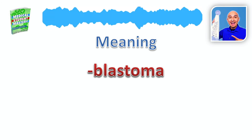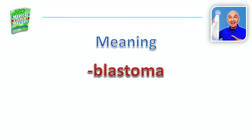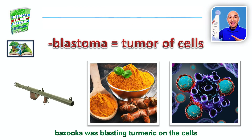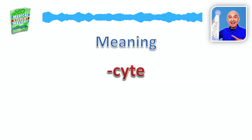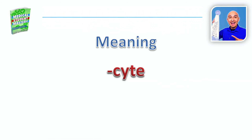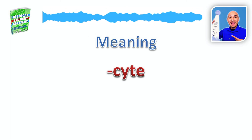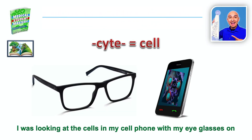Blastoma — what does -blastoma mean? That's right, you had a huge bazooka, and remember what you were blasting? You were blasting turmeric onto the cells. So that means tumor of cells. Sight, S-Y-T-E — what does -cyte mean? Remember all the visual triggers: cell phone, cell. That's right — -cyte means cell.